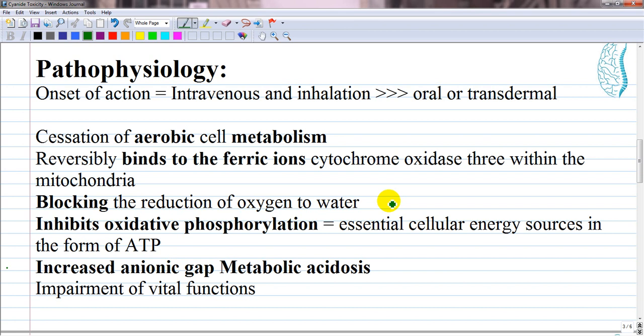The toxicity of cyanide is linked mainly to the cessation of aerobic cell metabolism. Cyanide reversibly binds to the ferric ions, cytochrome oxidase 3, within the mitochondria. This effectively halts cellular respiration by blocking the reduction of oxygen to water.